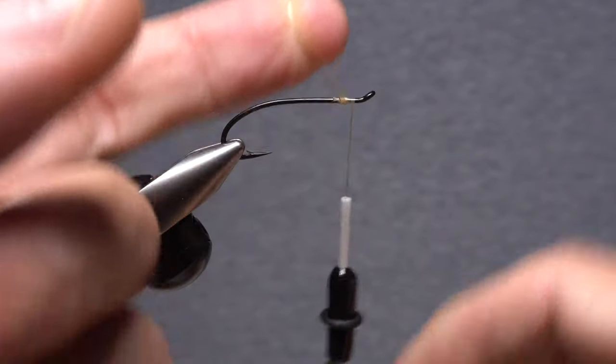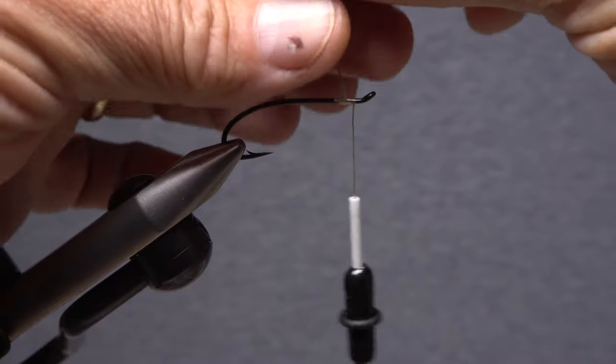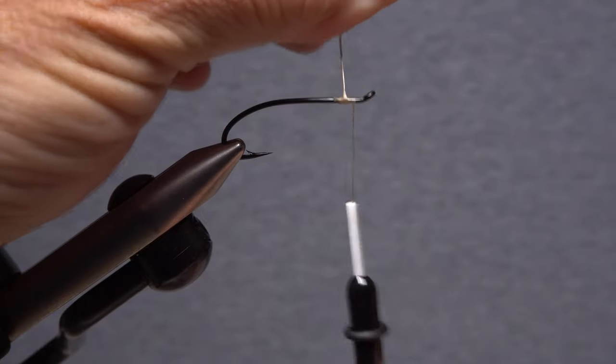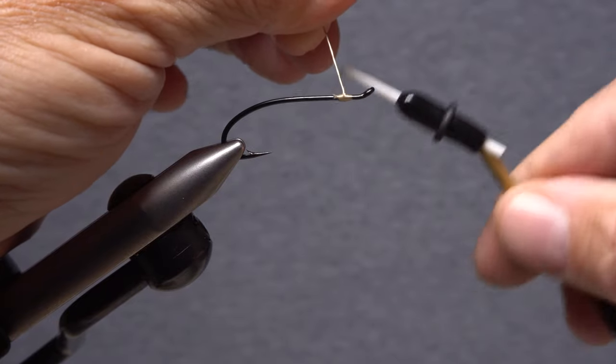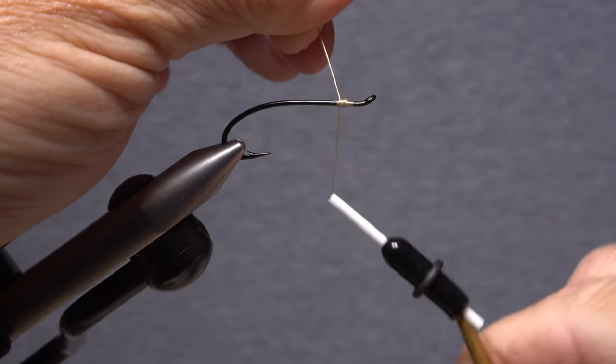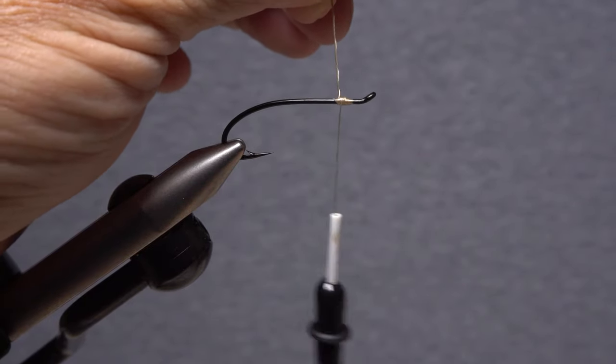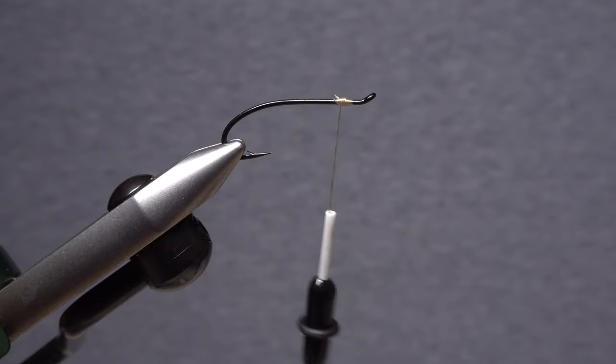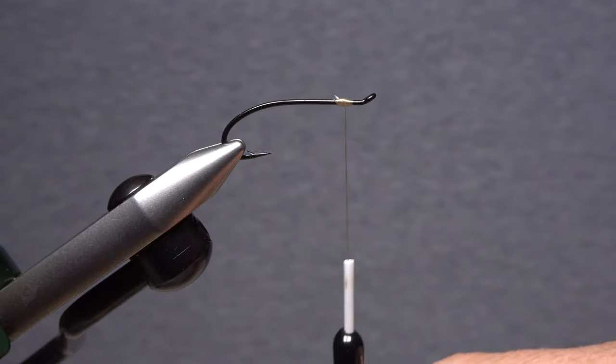Lift the thread loop up to vertical and give it a twist, so its two strands are twisted together well. Take counter wraps rearward with your tying thread over top of the twisted loop. Reach in with your tying scissors and snip the twisted loop off close. Then continue counter wrapping.